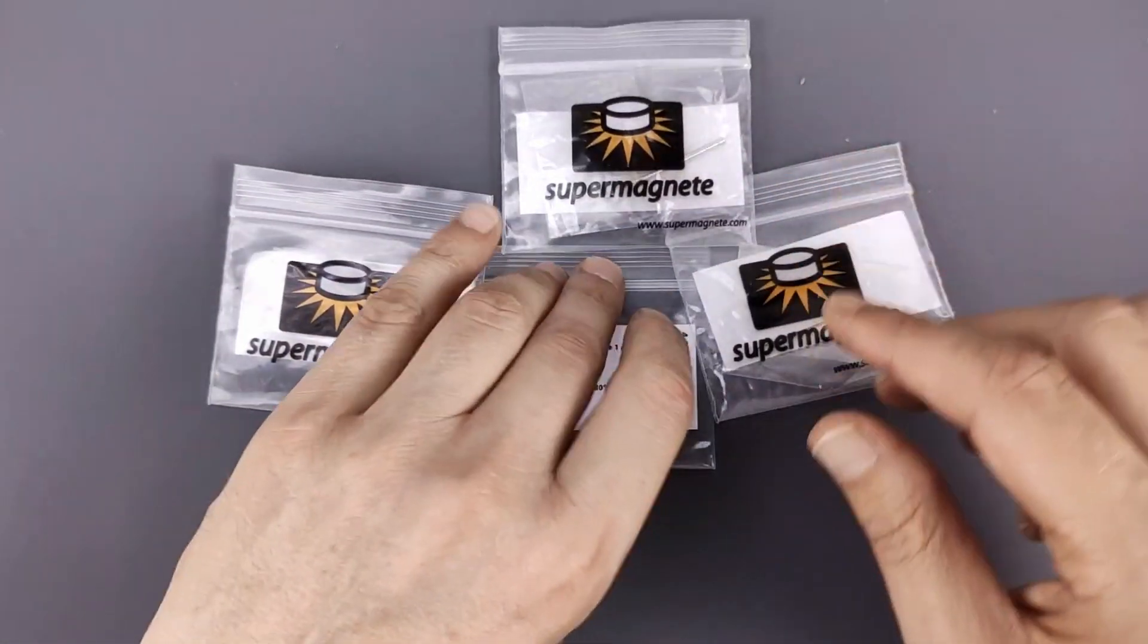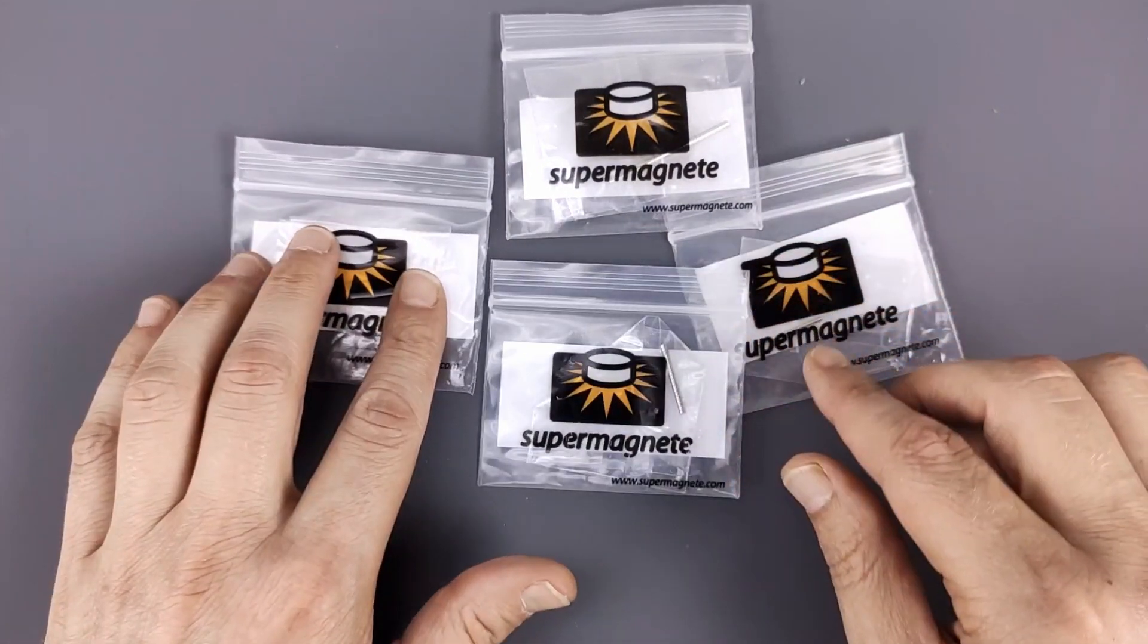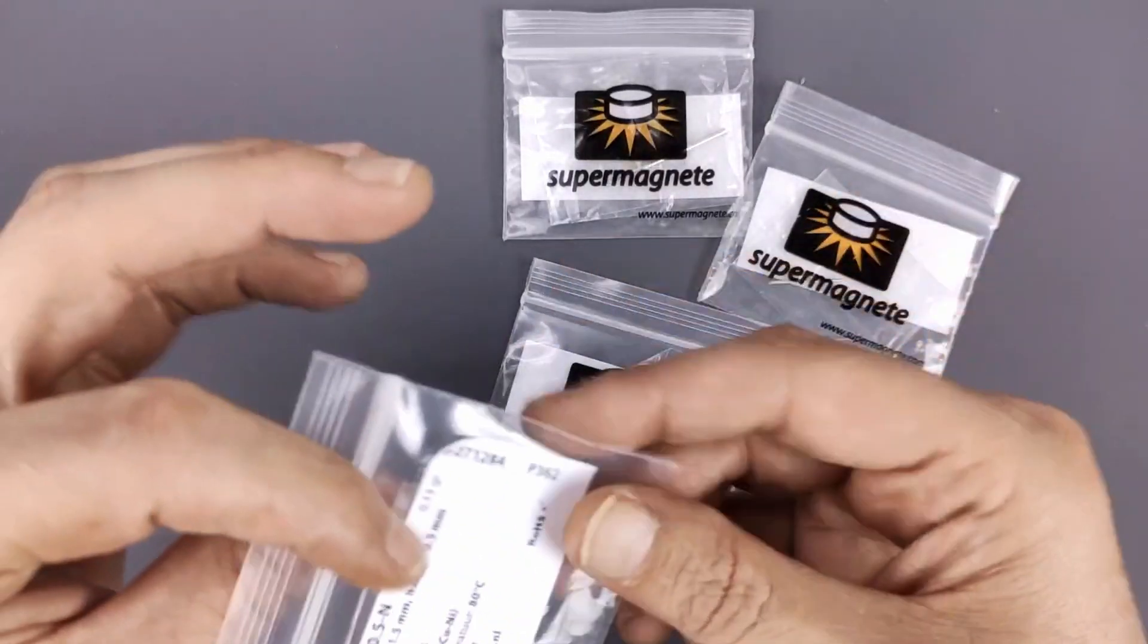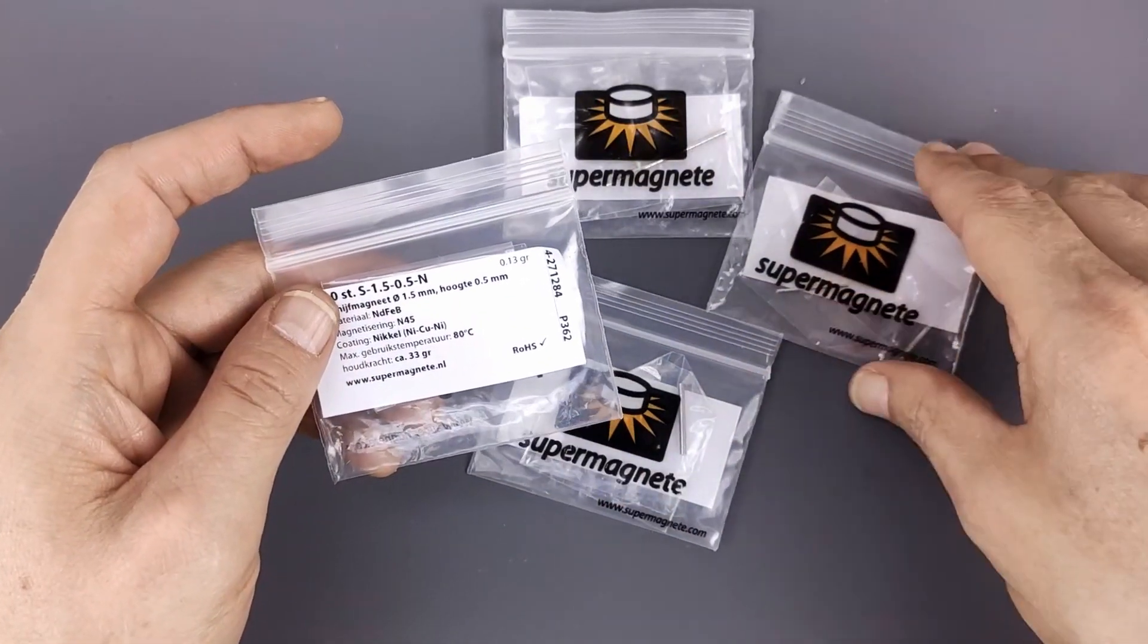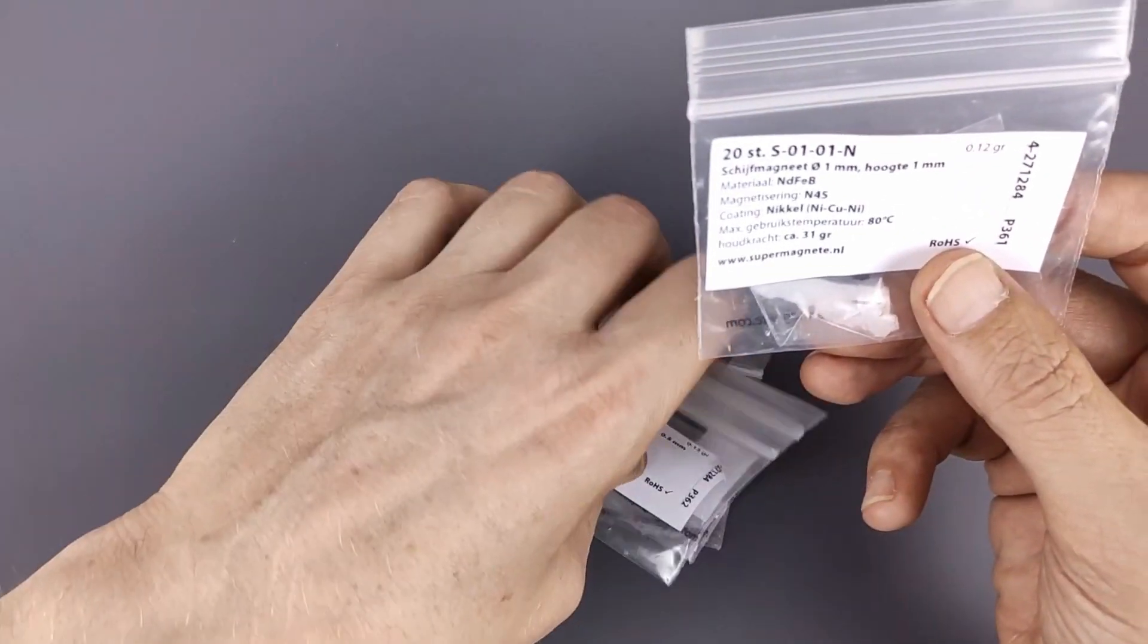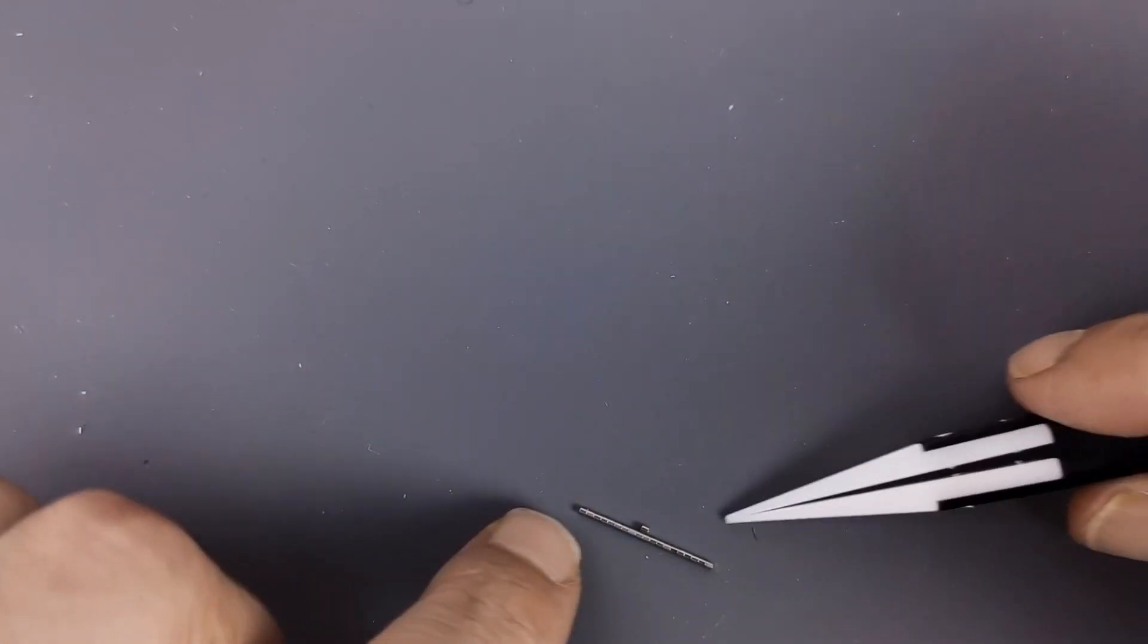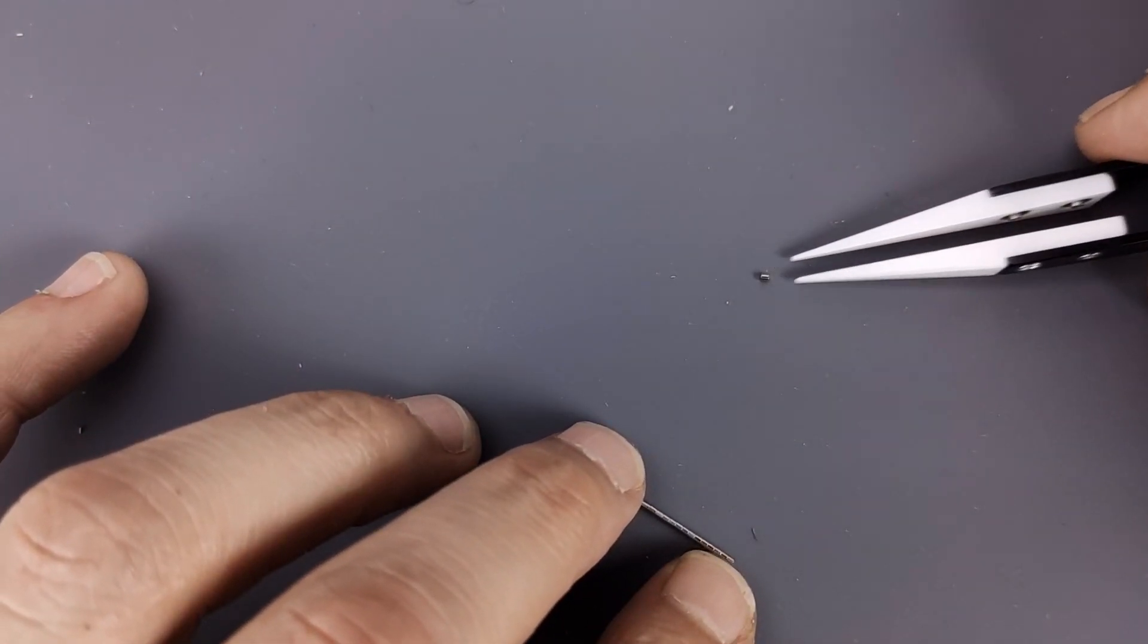So the people from Supermagnete, I have trouble pronouncing that in English, kindly sent me those. And let's just grab one and show you how small these things actually are. I'll grab the one that is one millimeter in diameter and one millimeter in height. Look at how small that is! Oh whoa, that's actually really strong. Look at that.